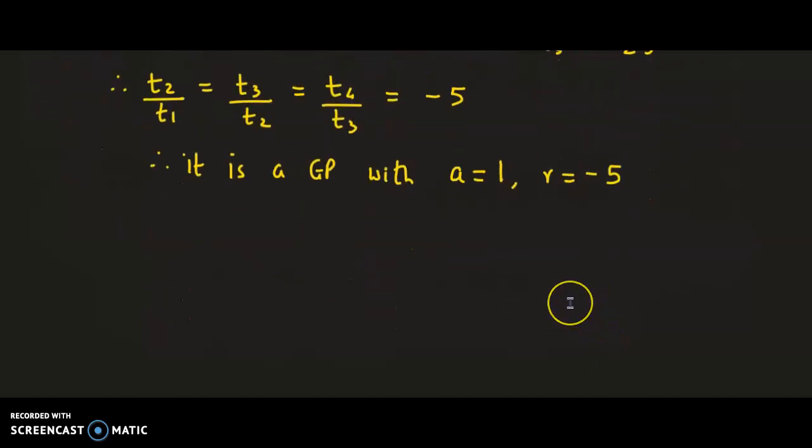Now we have been asked for the value of Tn. We know that for a geometric progression, Tn = A × R^(n-1).